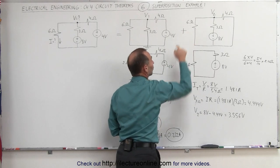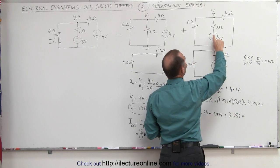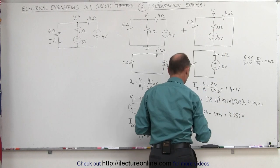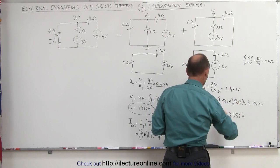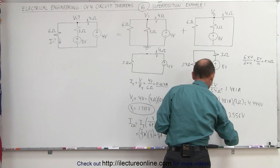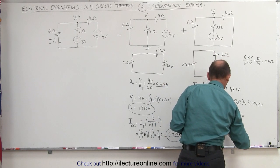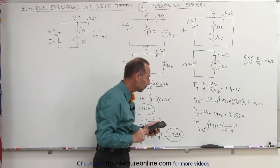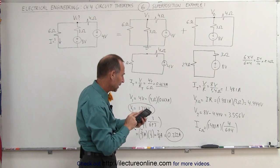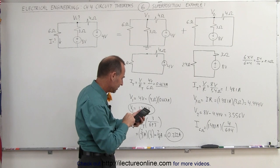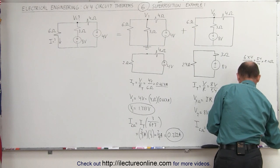Finally, we find the current through the 6 ohm resistor for the second circuit. There is 1.481 amps splitting between the 6 and 4 ohm branches. Using the current divider, the current through the 6 ohm resistor equals the total current times the ratio of the other branch: 4 divided by 10, or 0.4. So: 8 divided by 5.4 times 4 divided by 10 equals 0.593 amps.